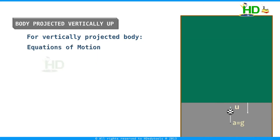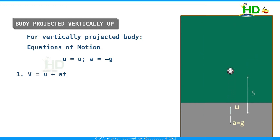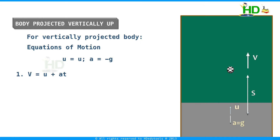Now we write the equations of motion for a vertically projected body. First, the equation v equal to u plus at gives the velocity after t seconds. For a vertically projected body, the initial velocity is u and acceleration a equals minus g. Therefore, the velocity after t seconds is v equal to u minus gt.